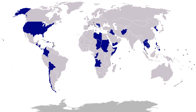1924, China, September: Marines were landed to protect Americans and other foreigners in Shanghai during Chinese factional hostilities. 1925, China, January 15 to August 29: fighting of Chinese factions accompanied by riots and demonstrations in Shanghai brought the landing of American forces to protect lives and property in the international settlement. 1925, Honduras, April 19 to 21: U.S. forces protected foreigners at La Ceiba during a political upheaval. 1925, Panama, October 12 to 23: strikes and rent riots led to the landing of about 600 American troops to keep order and protect American interests. 1926–1933, Nicaragua, May 7 to June 5, 1926, and August 27, 1926, to January 3, 1933: the coup d'état of General Chamorro aroused revolutionary activities leading to the landing of American Marines to protect the interests of the United States. United States forces came and went intermittently until January 3, 1933.